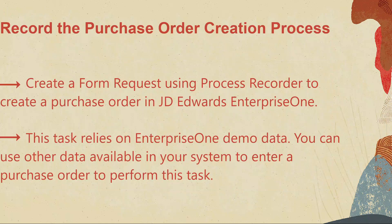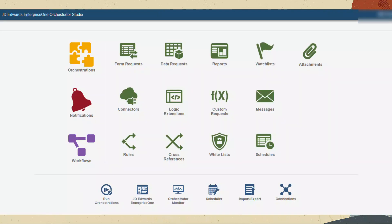Now we need to record the purchase order creation process. In this task, you will understand how to create a form request using Process Recorder to create a purchase order in JD Edwards Enterprise One. This task relies on Enterprise One demo data. You can use other data available in your system to enter a purchase order to perform this task. Sign in to the Enterprise One web client.